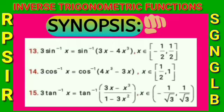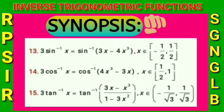Fourteenth point: 3cos⁻¹(x) = cos⁻¹(4x³ - 3x), where x belongs to [1/2, 1]. Fifteenth point: 3tan⁻¹(x) = tan⁻¹((3x - x³)/(1 - 3x²)), where x belongs to (-1/√3, 1/√3). These are the synopses.